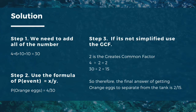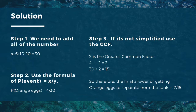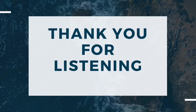Solution. Step 1: Add all the numbers — 4 plus 6 plus 10 plus 10 equals 30. Step 2: Use the formula P(event) = x/y. P(orange eggs) = 4 over 30. Step 3: If it's not simplified, use the GCF. 2 is the greatest common factor. 4 divided by 2 equals 2; 30 divided by 2 equals 15. Therefore, the final answer is 2 over 15. Thank you for listening.